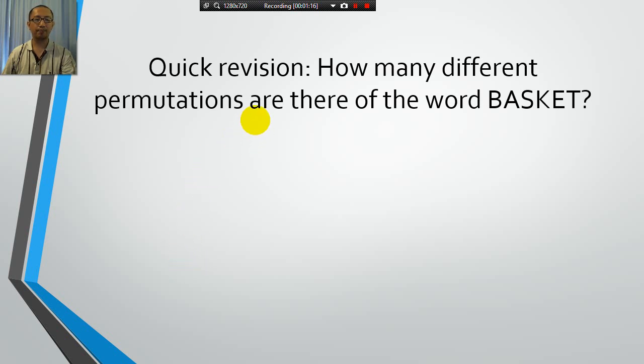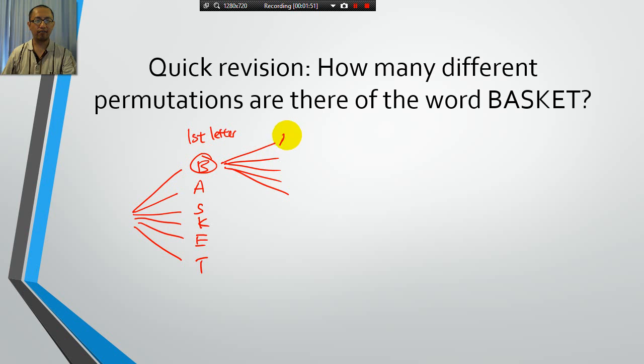But before we do that, let's do a quick recap on rearranging words where there are no repetitive letters. So for example, BASKET. Every word, every letter in here is different. How many different ways are there of rearranging it? Well, I'll just do a quick reminder by drawing a tree. So the first letter, you can either choose B, A, S, K, E, or T. Once you pick one, then let's say I pick B, then you have five options left for your second letter.